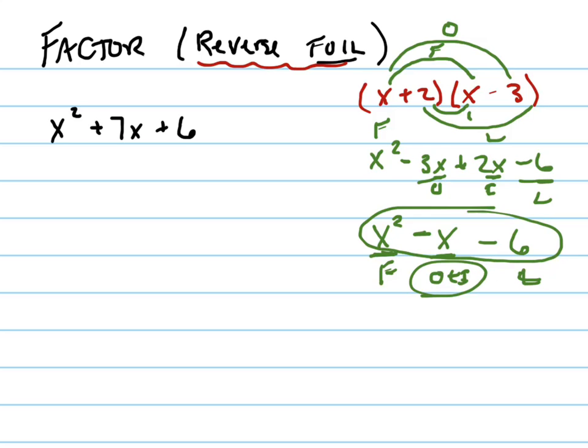So if I want to reverse that process, let's use this example right here. I want to reverse the foiling. That's the most common way of factoring, or at least the one that most people think of when they think of factoring, is reversing the foil process.